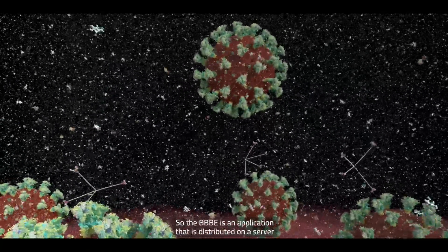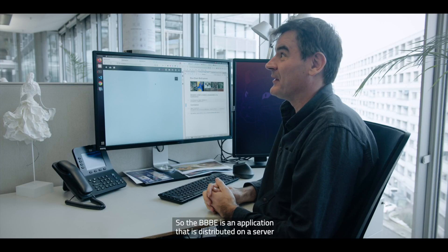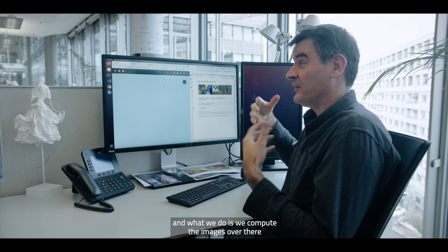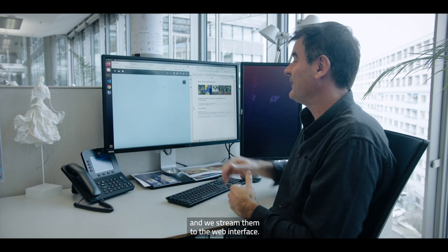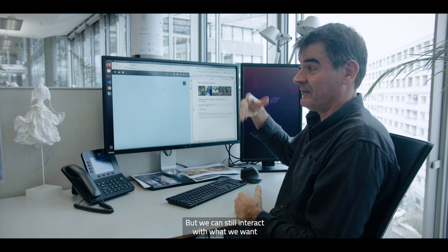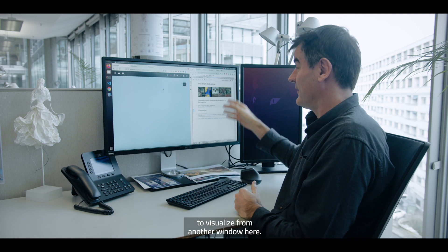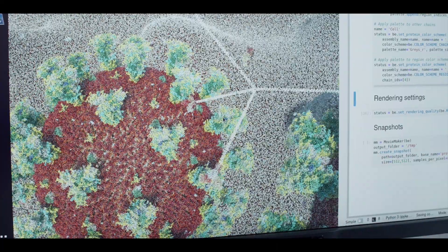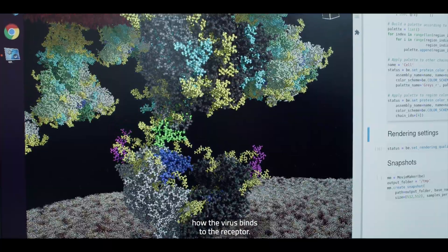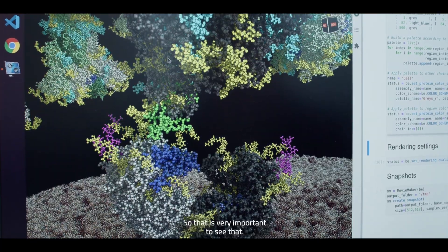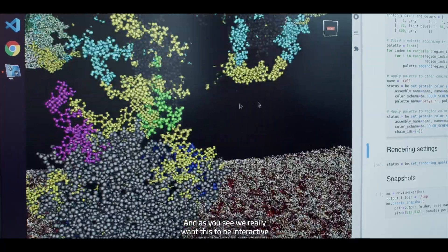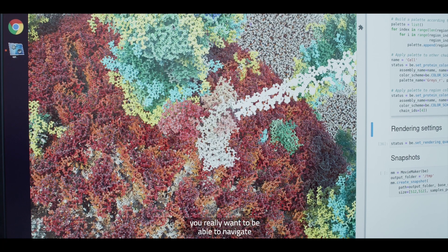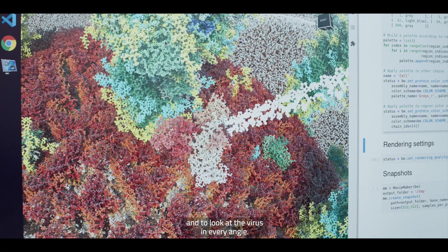So the Bio Explorer is an application that is distributed in the way that there is a server that is running on our system in Lugano. And what we do is we compute the images over there, and then we stream them to the web interface here. But we can still interact with what we want to visualize from another window here. And if I zoom out, then you can see the virus here. And what you want to see is how the virus binds to the receptor. So that's very important to see that. And as you see, we really want this to be interactive, and that's the concept of exploration. That's why it's called the Explorer. It's not just images. You really want to be able to navigate and to look at the virus from every angle.